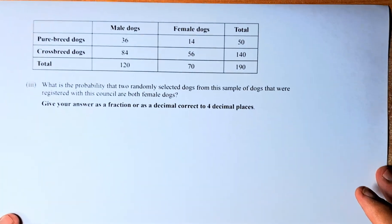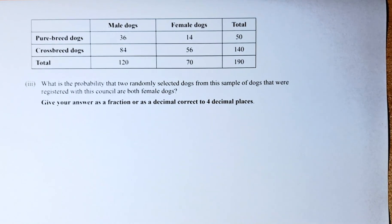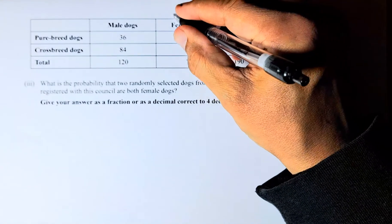Okay, the last question is a bit tricky. Normally, it would be an excellent question, but for this paper, it is a merit question. What is the probability that two randomly selected dogs from this sample of dogs that were registered were both female dogs? So we are looking at the female dogs now.